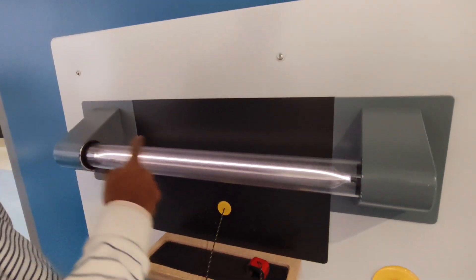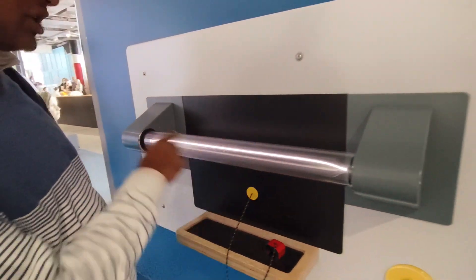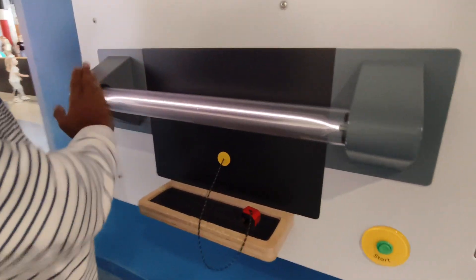This rod contains cathode ray tubes where a beam of electrons is going from left to right.